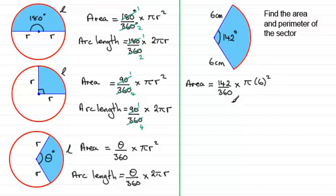Now, if you had to give this in terms of π, remember, what we've got to work out then would be 142 divided by 360 times 6 squared. And that comes to 14.2, and then you'd just leave the π in.